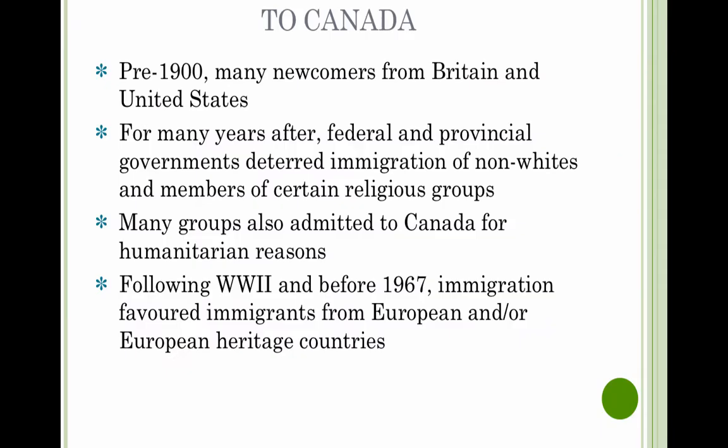When we look at patterns of immigration, Canada has had a history of immigration from almost the day it became a country. From the pre-1900s, most immigrants came from Britain and the United States. Those immigration waves have changed over the years. Federal and provincial governments at one point deterred the immigration of non-whites — in our early years, Chinese and Japanese were affected this way, as well as other groups. Many groups were also admitted to Canada for humanitarian reasons. Looking back over history, it's impossible to talk about immigrants as a single group — many factors affected who was allowed to immigrate, where they went, and how many could come in any given period.